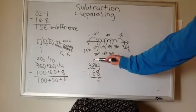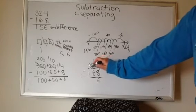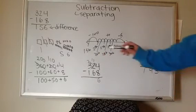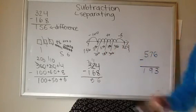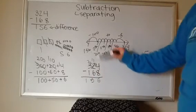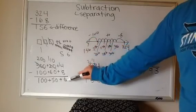14 minus eight is six. Oh, here I am again. I can't do one minus six, but three can become two. So one can become 11. 11 minus six is five. And then two minus one is one. So again, I got the same difference every time.